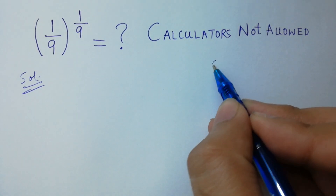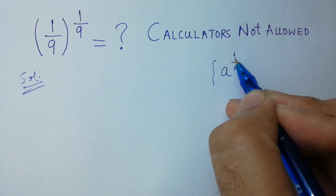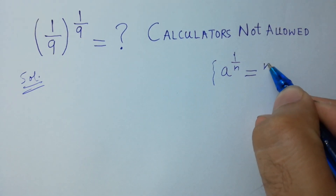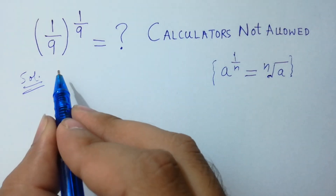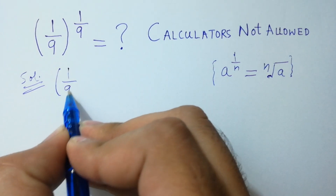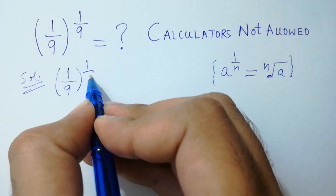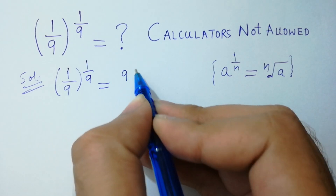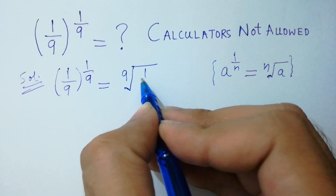Since a to the power 1 over n equals n-th root of a, so 1 over 9 to the power 1 over 9 will be equal to the 9th root of 1 over 9.